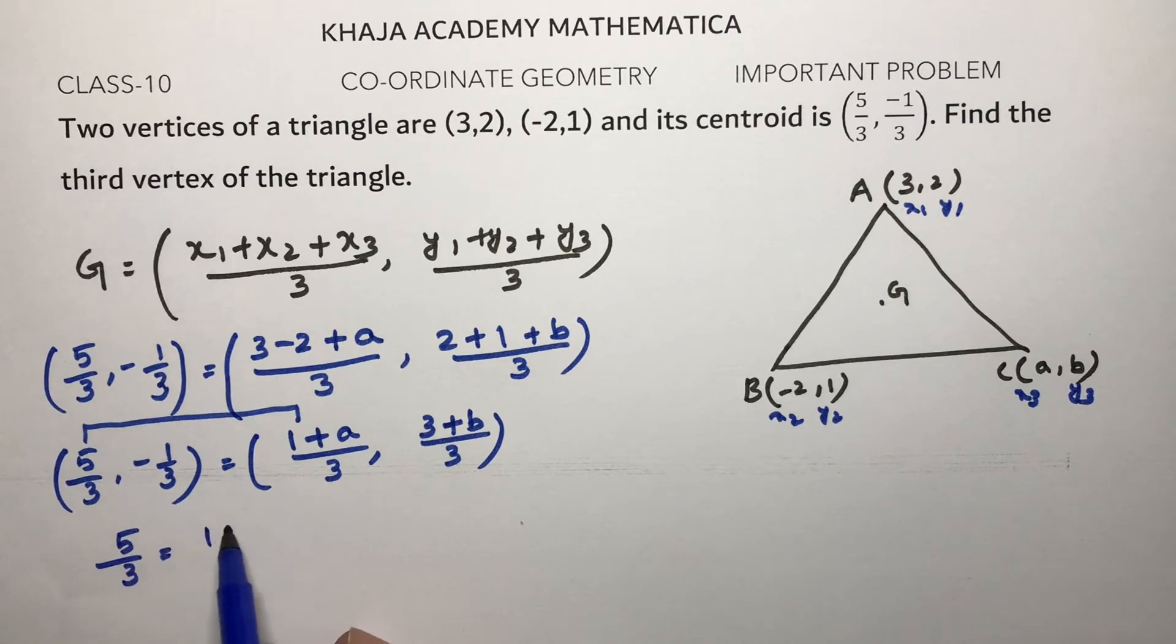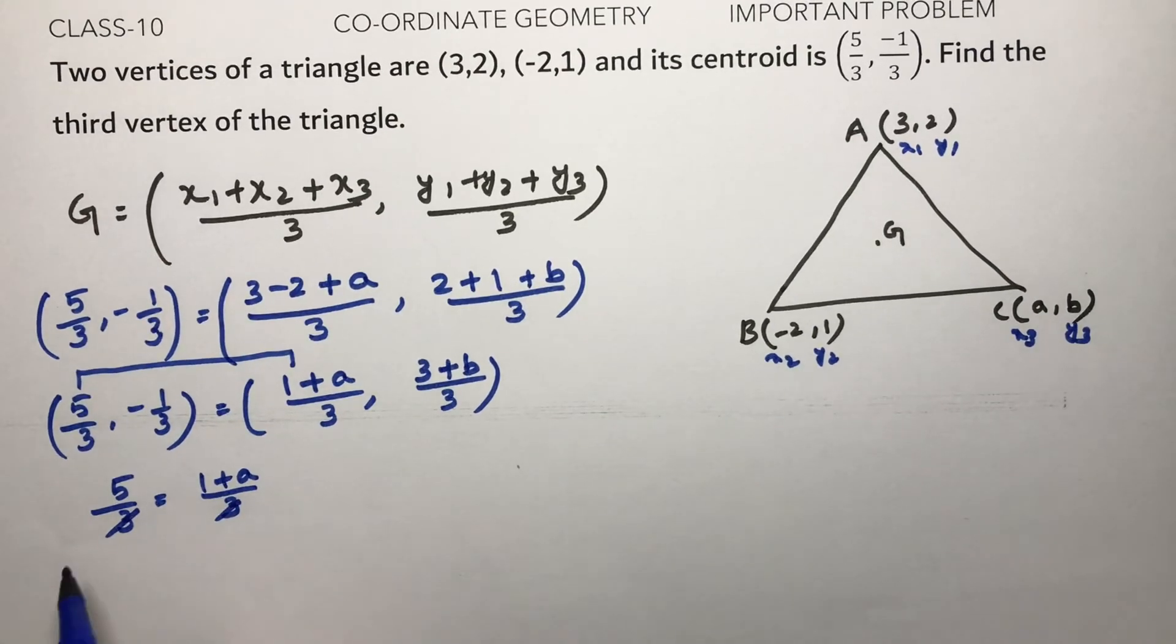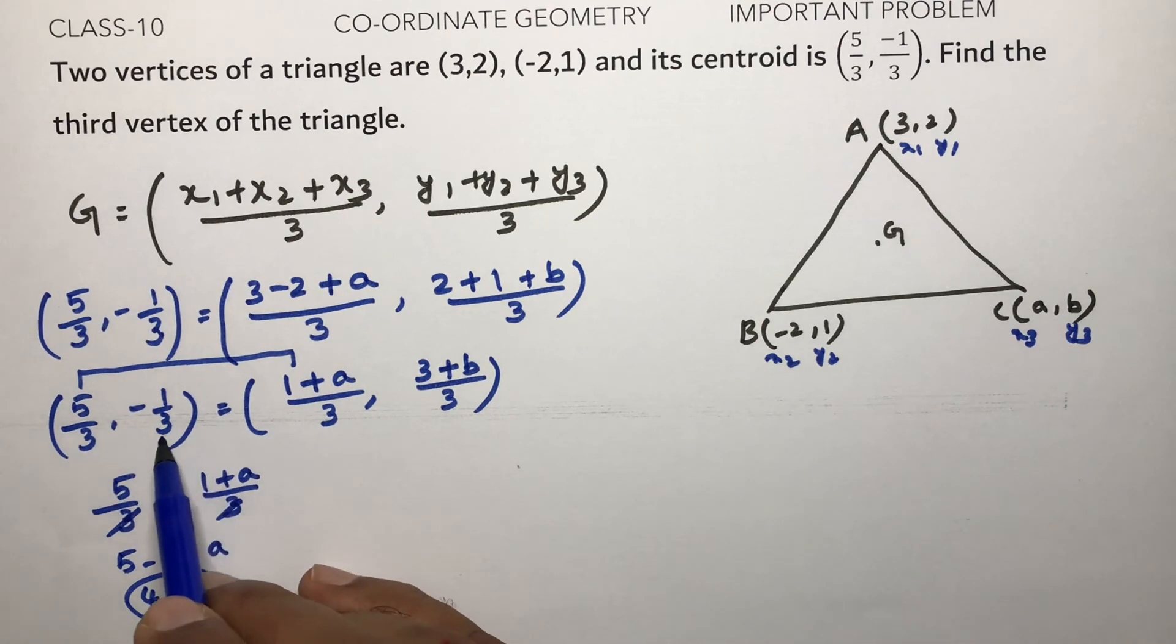3, 3 cancel, so yeah, 5. If I transpose minus 1, 5 - 1 equals a. So 4 equals a. So the value of a is 4.